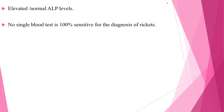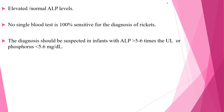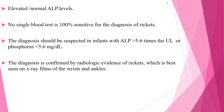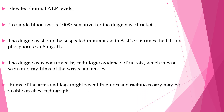No single blood test is 100% sensitive for the diagnosis of rickets of prematurity. The diagnosis should be suspected in infants with alkaline phosphatase greater than five to six times the upper limit of normal for adults, or phosphorus less than 5.6 mg/dL. The diagnosis is confirmed by radiologic evidence, best seen on X-ray films of the wrist and ankles. Films of the arms and legs might reveal fractures, and rachitic rosary might be visible on chest radiograph. Unfortunately, X-ray films cannot show demineralization of bone because changes are not evident until there is more than 20 to 30 percent reduction in bone mineral content.